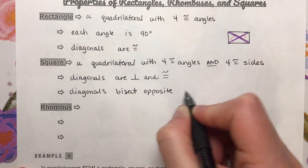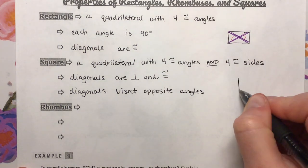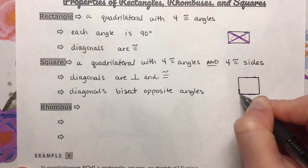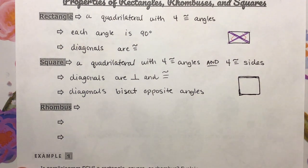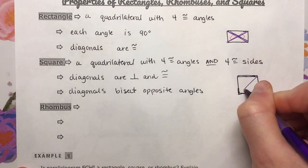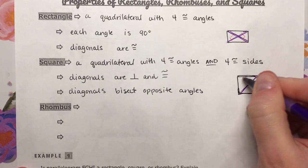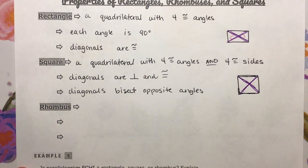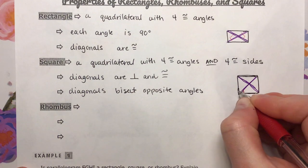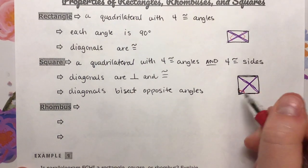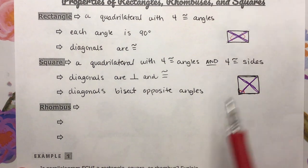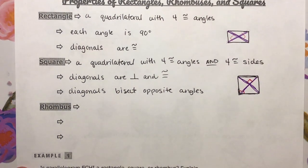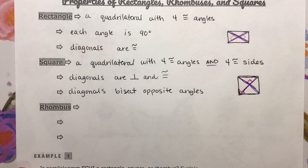What does that mean exactly? If we were to draw an example of a square and draw in our diagonals, these opposite angles are going to be cut in half — this angle is congruent to that one. This 90 degree angle is being bisected. Also, the diagonals are going to intersect at a 90 degree angle. Remember, perpendicular means intersecting at a 90 degree angle.